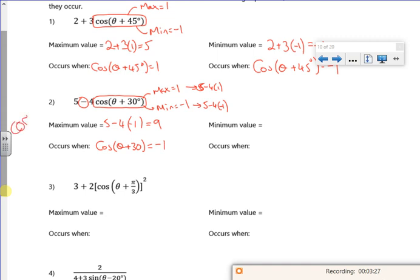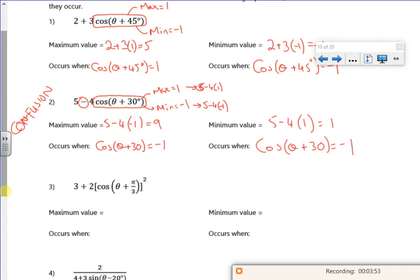So if I put 1 in, it won't give me the biggest value for that specific graph because of this minus sign here. So I'm going to stick a minus in there and that will give me 9 as an answer. And that's when cos of theta plus 30 is equal to minus 1. So this one could cause a lot of confusion.